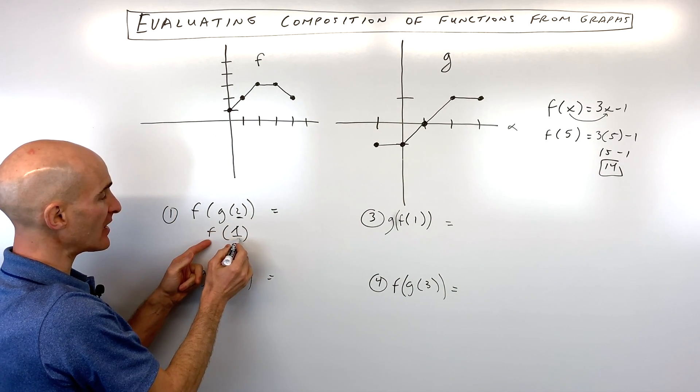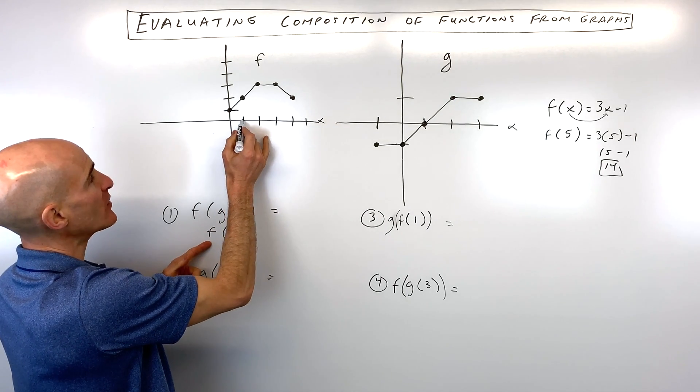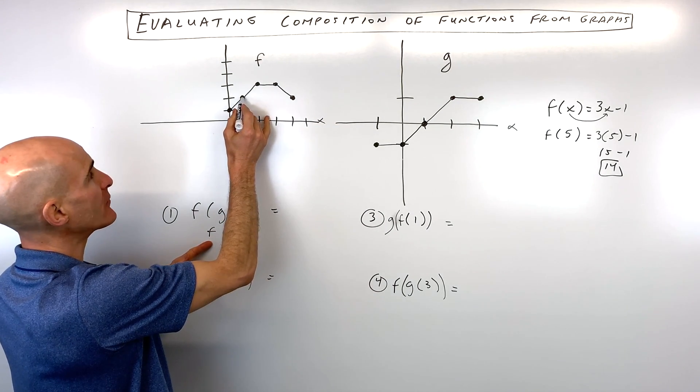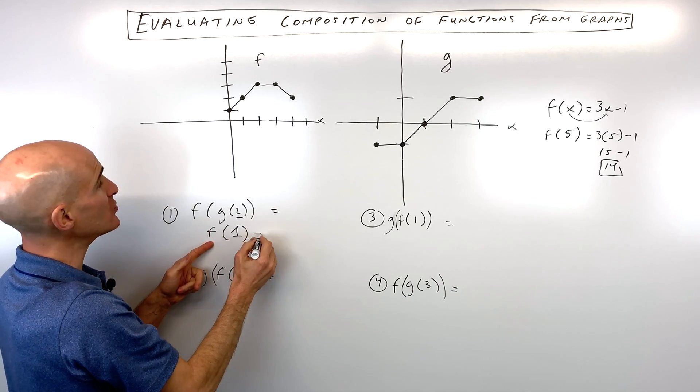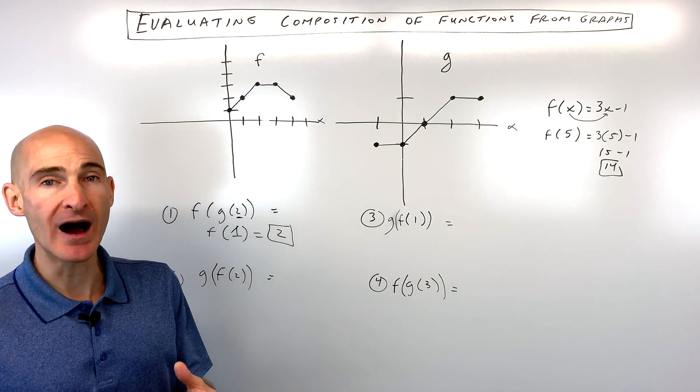Now we work from the inside out. We say, okay, what's f of 1? We go to our f function here. We say when x is 1, we go up to the graph. You can see that the y value is equal to 2, and that's our final solution. So basically, start from the inside and work your way out.